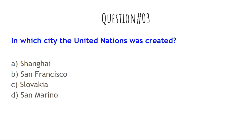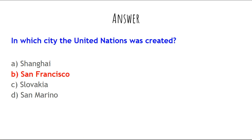The next question is: In which city was the United Nations created? The options are: Shanghai, San Francisco, Slovakia, or San Marino. The answer is San Francisco. You have to remember that the United Nations was created in San Francisco.